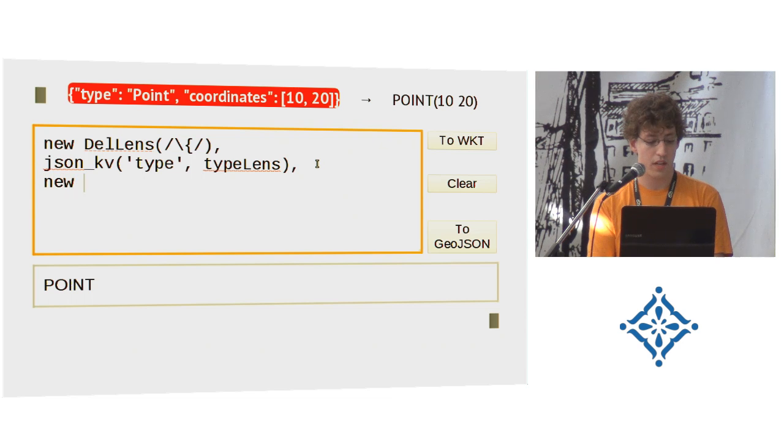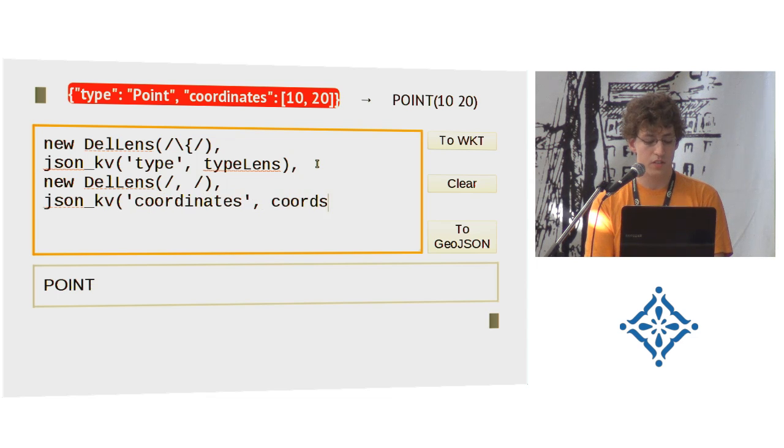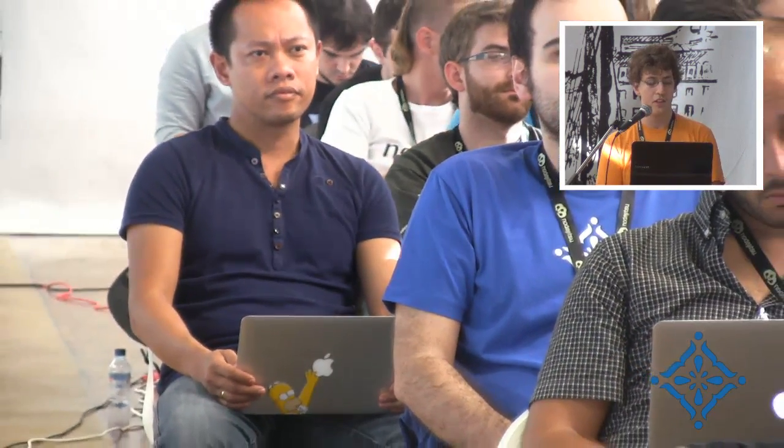Now we just need to also delete again the comma and the space because we don't need it. And again we need the json_kv lens for the coordinates. This, again, I stored the transforming the coordinates in the lens called coords lens. And finally, we delete the trailing curly bracket. Wow, it works. I haven't managed to do it without a mistake when I try to do it, so it's the first time it works. Excellent.